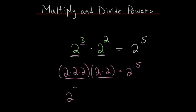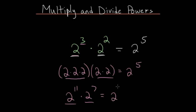Just understanding what it means to raise something to an exponent. So if you had something like 2 to the 11th times 2 to the 7th, we know that we have 11 2s multiplied together here, and we have 7 2s multiplied together here. So in total, we would have 18 2s multiplied together.